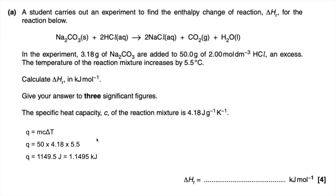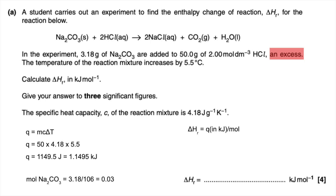Convert that straight into kilojoules. Next, calculate moles — we're told HCl is in excess, so we base our moles on the limiting reagent, which is the sodium carbonate. Mass over Mr gives us moles of 0.03. Then ΔH is Q in kilojoules divided by the moles, giving a ΔH to three significant figures of minus 38.3 kilojoules per mole — don't forget the sign.